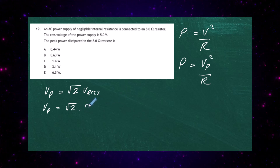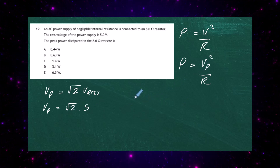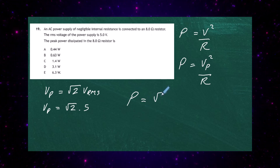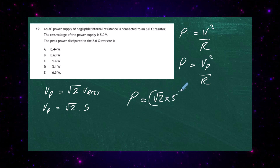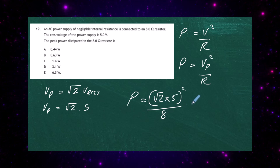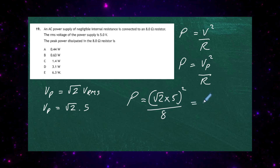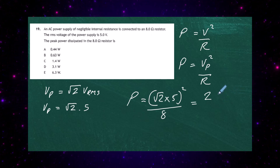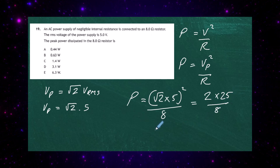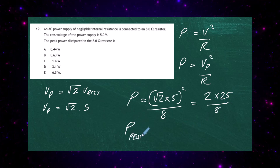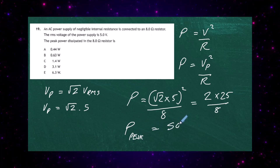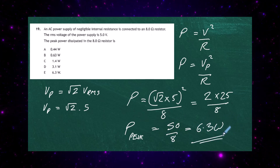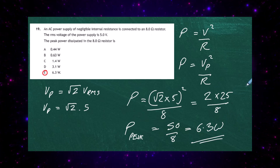So peak voltage equals root 2 times 5 volts. Substituting into the power equation: peak power equals (√2 × 5)² divided by 8. Squaring the bracket gives 2 × 25, which is 50. Dividing by 8 gives 6.3 watts. So our answer is 6.3 watts, which is response E.